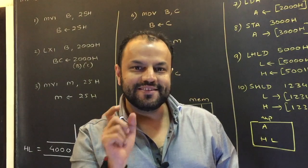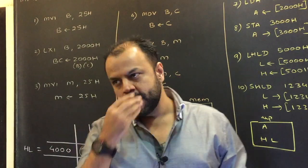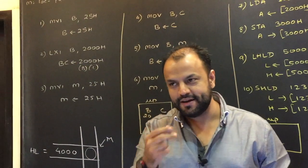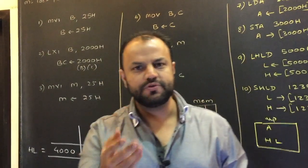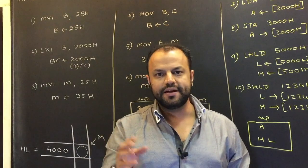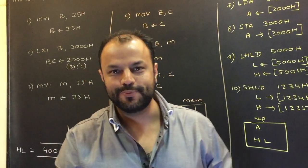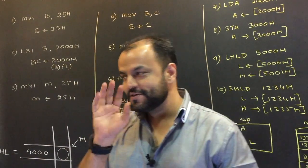When you use them as a pair, they work as a 16-bit register pair. So you can form B, C pair, D, E pair, and H, L pair. A is a singular register. But you know, if you've seen the architecture, it's the most important register, also called the accumulator. It acts as the accumulator in arithmetic and logic operations.